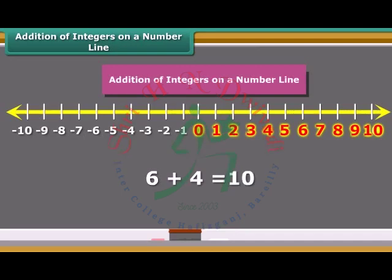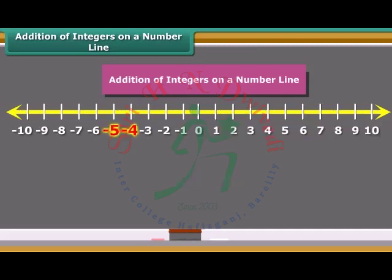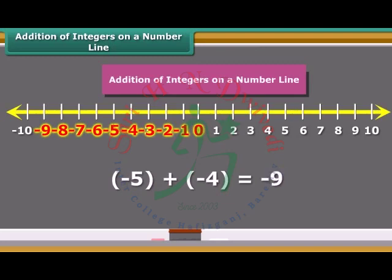Let us add two negative numbers, minus 5 and minus 4 on the number line. In this case, first we move five steps to the left of 0 reaching minus 5, and then we move four steps to the left of minus 5 and reach minus 9. So we see, when we add two positive integers, their sum is a positive integer. When we add two negative integers, their sum is a negative integer.